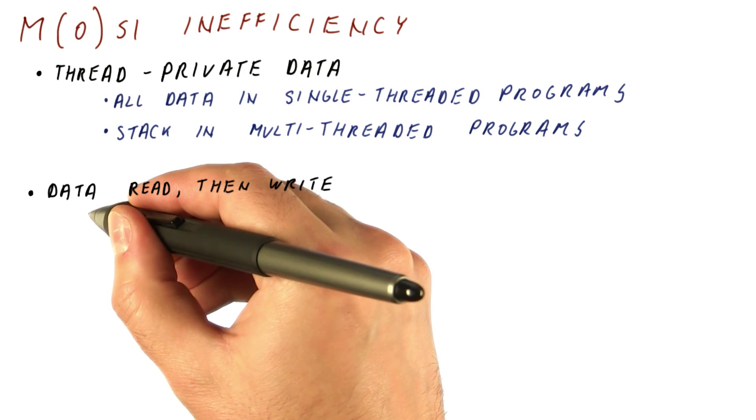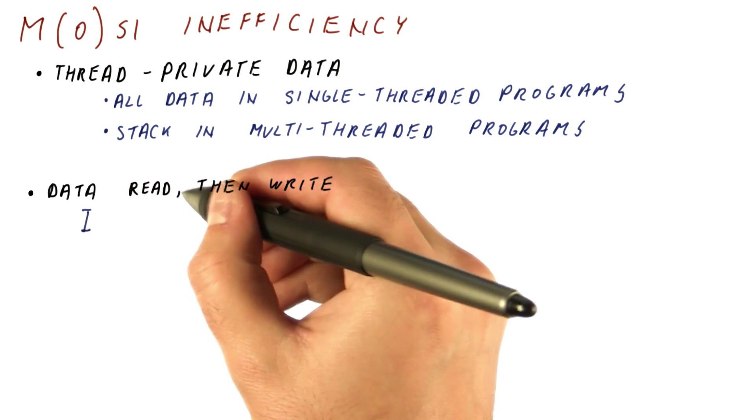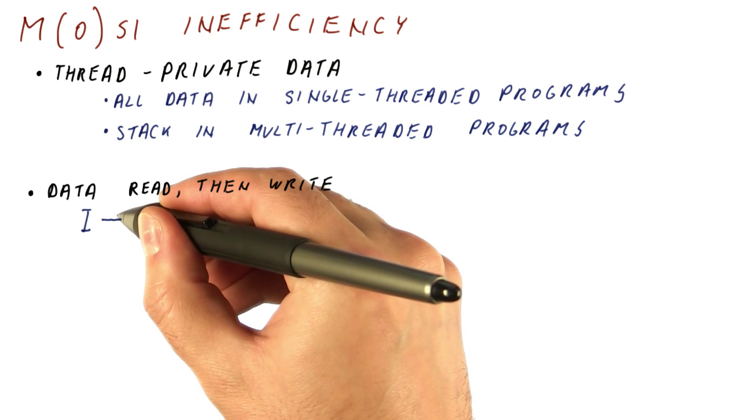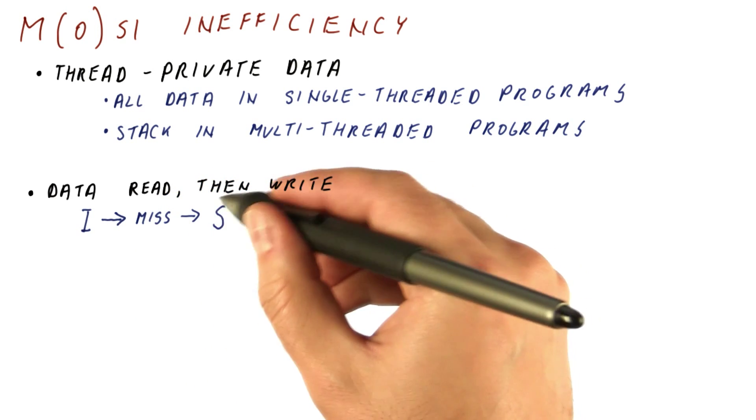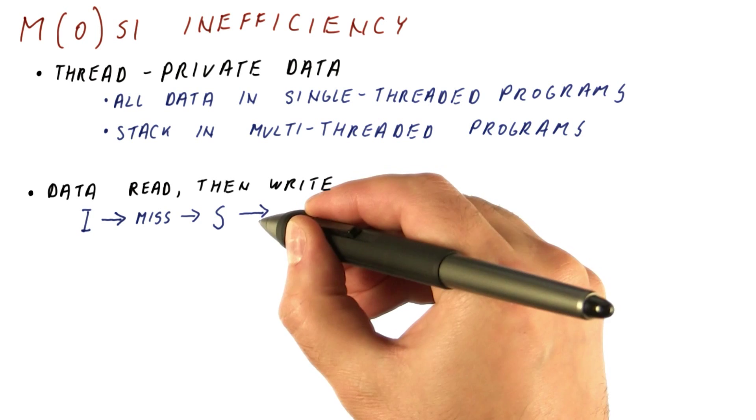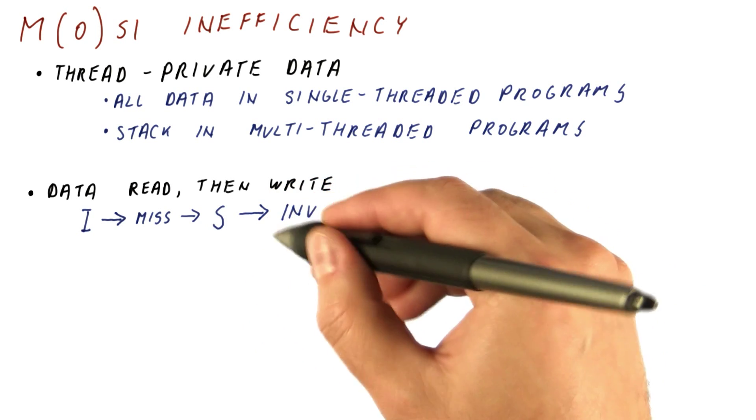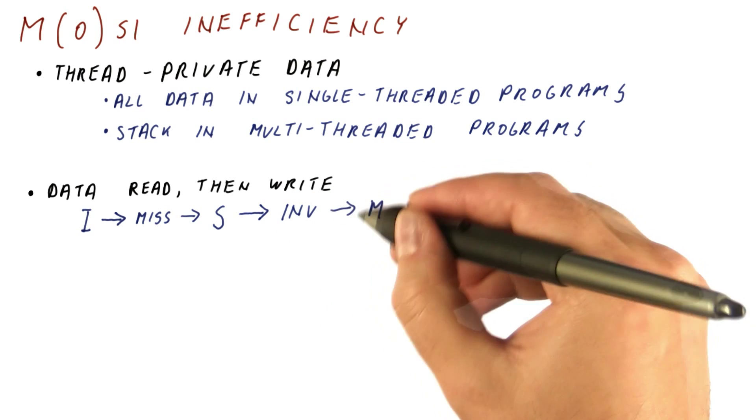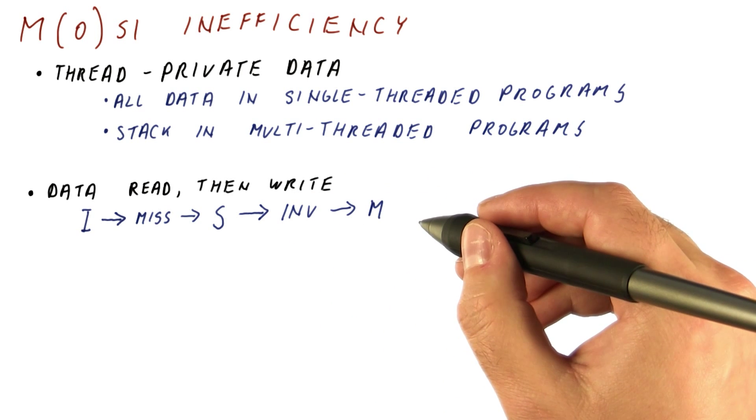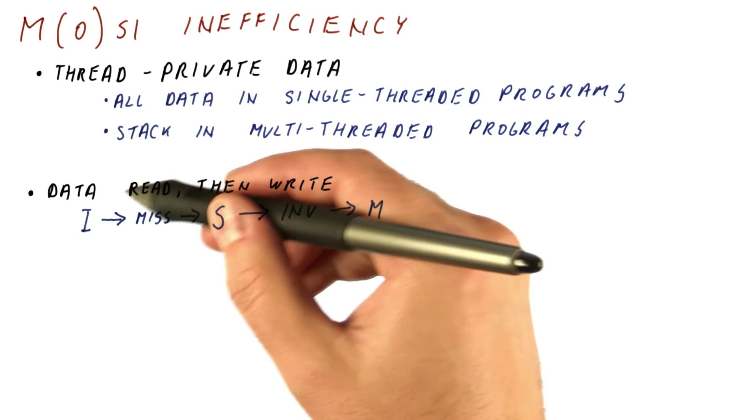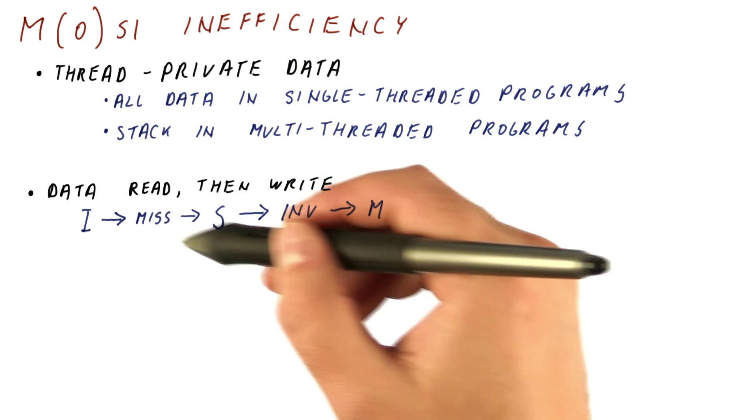the data was invalid before we had it. We read it, we have a miss, now we get the data in the shared state. When we want to write it, because it's in the shared state, we need to send out an invalidation, and then we have the block in the modified state. For every single block of data, we have to do this.